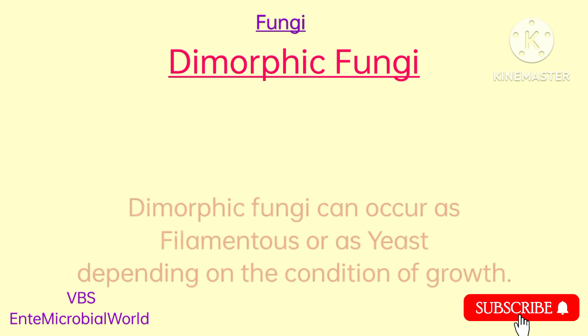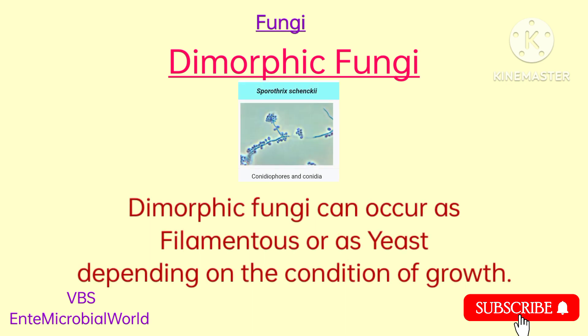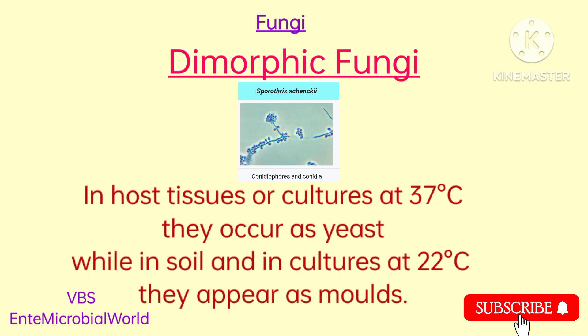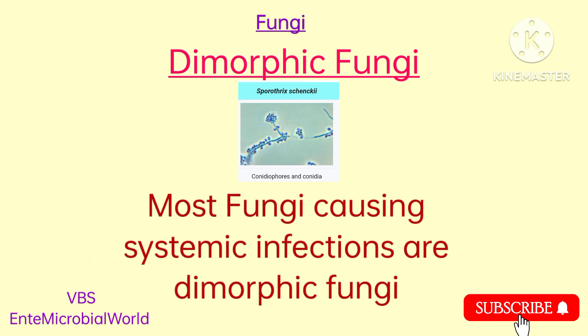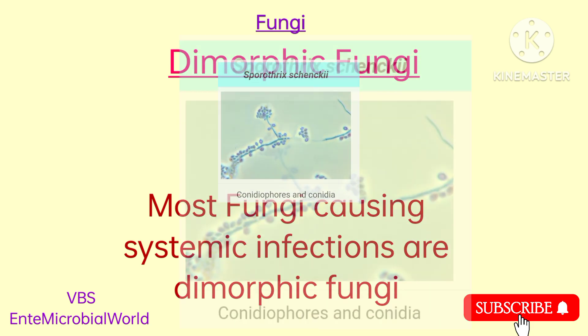Dimorphic fungi can occur as filamentous or as yeast depending on the conditions of growth. In host tissues or cultures at 37 degrees Celsius they occur as yeasts, while in soil and in cultures at 22 degrees Celsius they appear as molds. Most fungi causing systemic infections are dimorphic fungi.